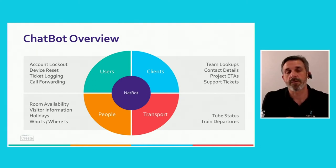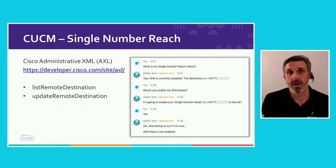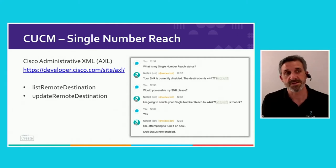Now I'll go into the detail of some of those features. This first one was added a really long time ago, before adaptive cards was a thing in chatbots. It's basically using a fairly simple natural language engine to set single number reach on Communications Manager. What we're doing is asking to set or disable single number reach — historically very useful if you'd already left the office and needed to turn that on or off. To deliver that, we're just using two simple features: list remote destination and update remote destination.